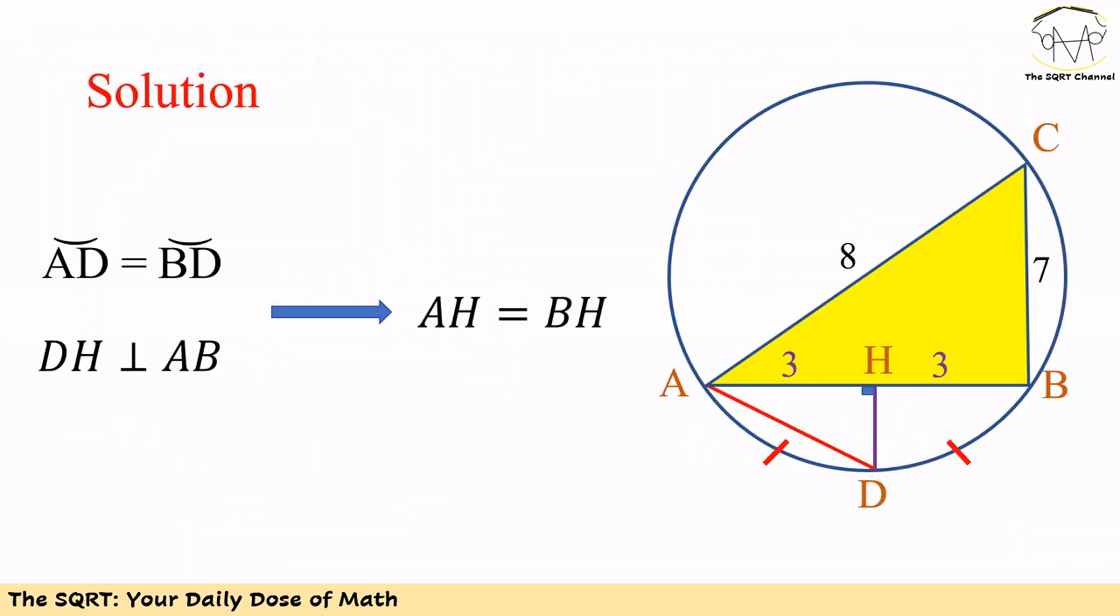To solve the problem, we first connect D to H using a perpendicular. Since we have equal chords AD and BD with a right angle at H, we can show that AH equals BH, and each one equals 3, because AB equals 6.